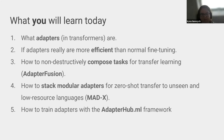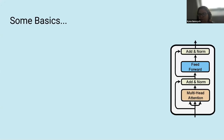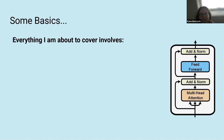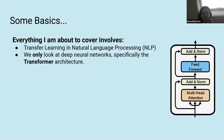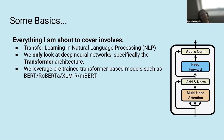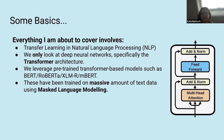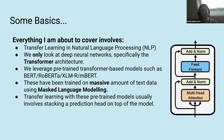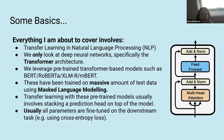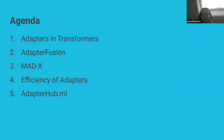Finally, I'll talk about how to train adapters with the AdapterHub framework that Jonas has developed. First, some basic background: everything I'm about to cover involves transfer learning in NLP. We only look at deep neural architectures, specifically the transformer architecture, and we leverage pre-trained transformer-based models such as BERT, RoBERTa, XLM-R, or mBERT, which have been trained on massive amounts of textual data using masked language modeling. Transfer learning with these pre-trained models usually involves stacking a prediction head on top of the model and fine-tuning all parameters on the downstream task using cross-entropy loss.